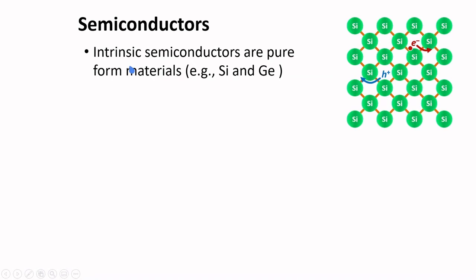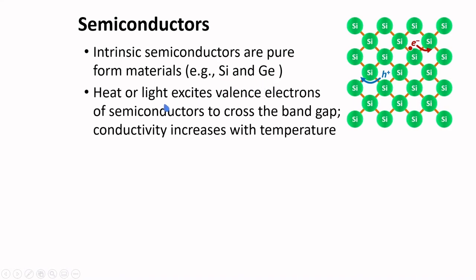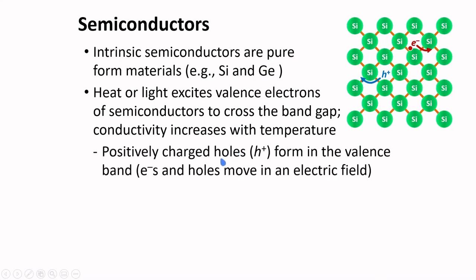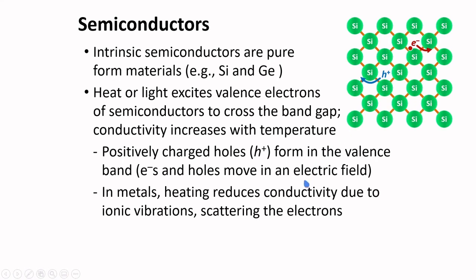Semiconductors are important materials of industry. Intrinsic semiconductors are pure form materials, such as pure silicon and pure germanium. Heat or light excites valence electrons of semiconductors to cross the band gap, and conductivity increases with temperature. Positively charged holes form in the valence band once electrons are excited to the conduction band, and these electrons and holes move in an electric field. In metals, heating reduces conductivity due to ionic vibrations scattering the electrons.